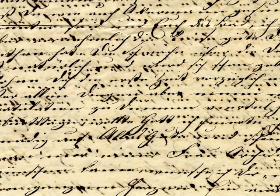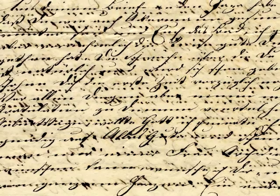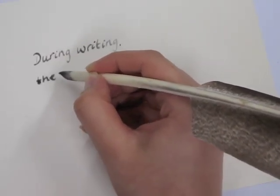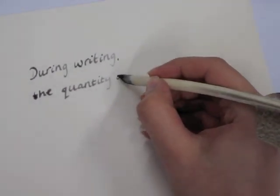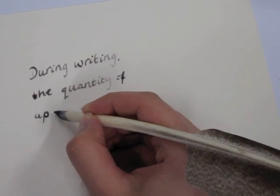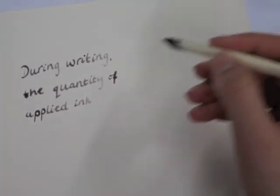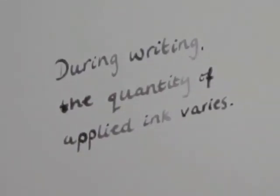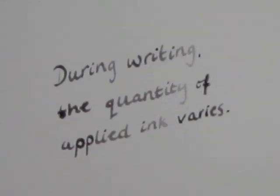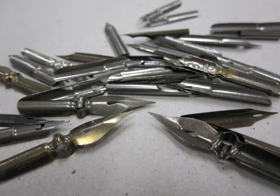The second important characteristic is the distribution of the ink on, but especially within the paper. During writing with a quill pen, different amounts of ink are applied onto the paper. The properties of the paper determine how much ink will be absorbed. Badly sized papers will absorb much more ink than a well-sized, good writing paper. Also, the velocity of the ink fluid itself, the ductus of the writer, and the chosen writing instrument influence the amount of ink applied onto the paper.